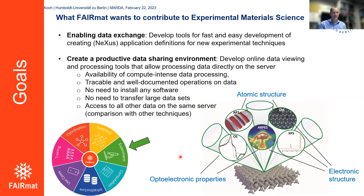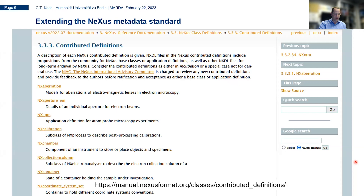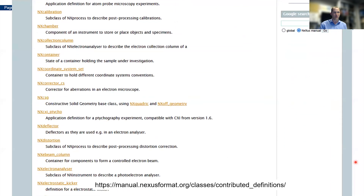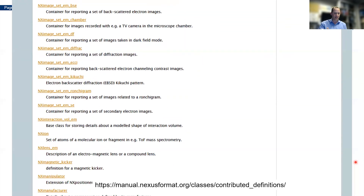FAIRmat's funding started about a year to a year and a half ago and has employed roughly 25 people doing many different things: building metadata standards, developing code and infrastructure to ingest, display, and search data. For the experimental part, we initially focused on five techniques covering optical and electronic properties, atomic structure, different spectroscopy techniques, electron microscopy, and atom probe tomography, and have since expanded to include scanning probe microscopy as well.